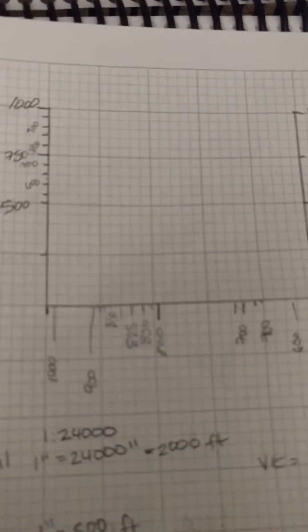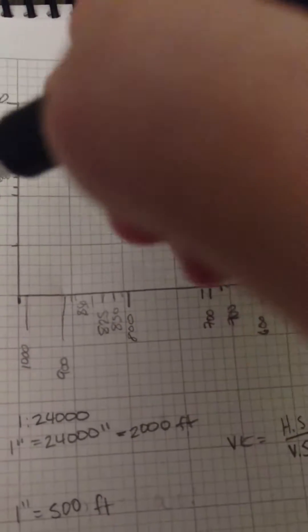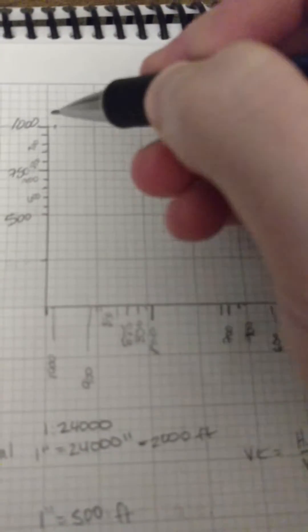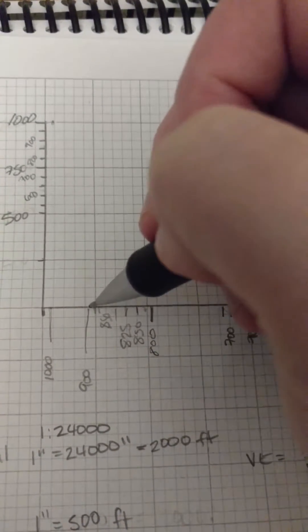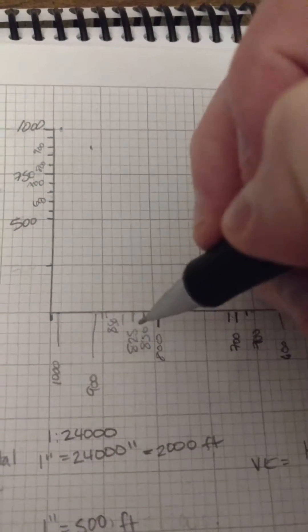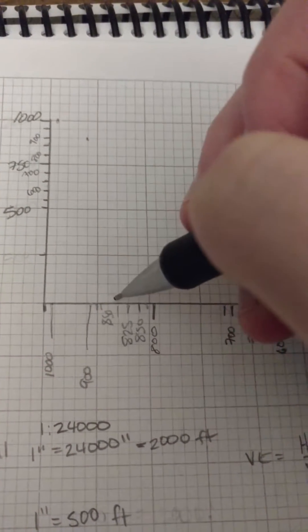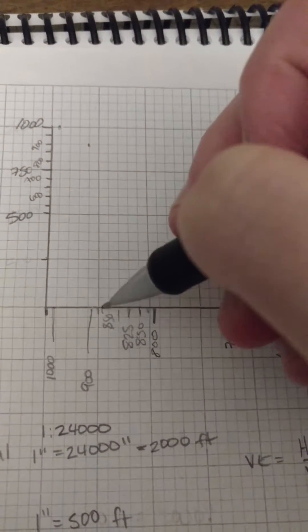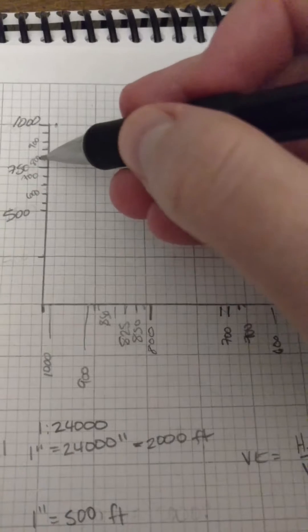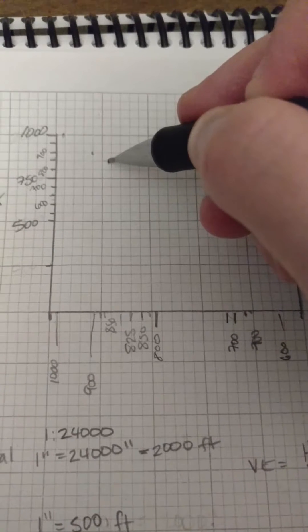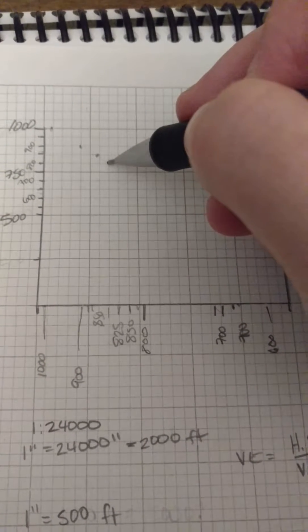All right, so now I'm ready to draw my actual elevations on my topographic profile. So I'm going to go right above 1,000, and I'm going to put my tick mark at 1,000. I'm going to do the same thing for 900. And these look like they're pretty steadily decreasing, except for this one, it looks like it goes back up. So it looks like it drops to about 850. It looks like it drops to about 850, and then it reduces down to 825.